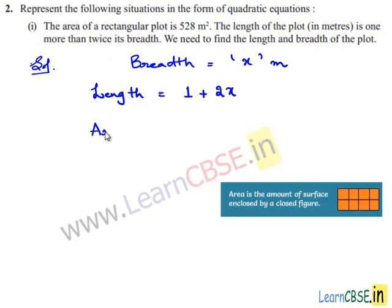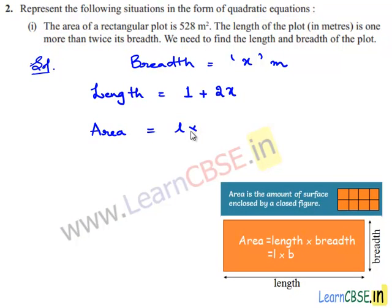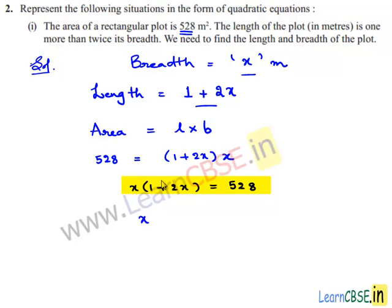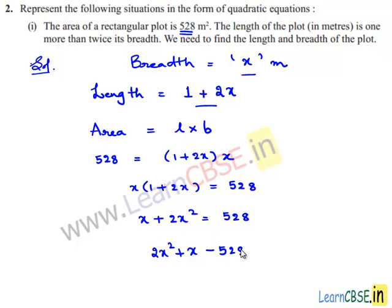We know that the area of the rectangle is equal to length multiplied by breadth. The given area of the rectangular plot is 528 square meters, the length is 1 plus 2x, and the breadth is x. Rearranging the terms, we get x times of (1 plus 2x) is equal to 528. Expanding: x times 1 is x, and x times 2x is 2x squared, giving 2x squared plus x equals 528. Transposing 528 to the left-hand side, we get minus 528, so the equation equals 0.